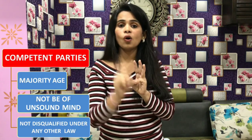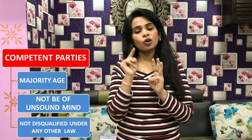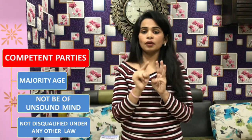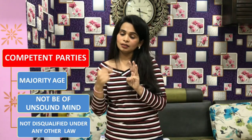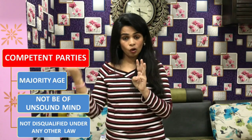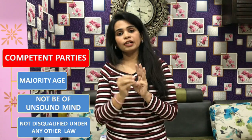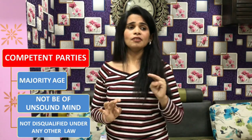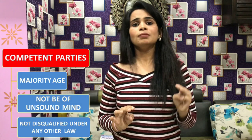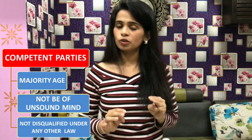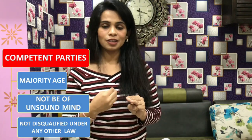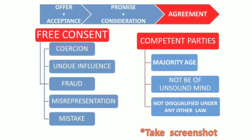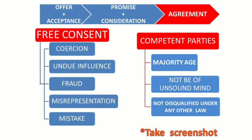He must not be disqualified under any other law from entering into a contract — for example, no alien, enemy, or spy should be allowed to enter into any agreement. That completes the third point — competent parties.